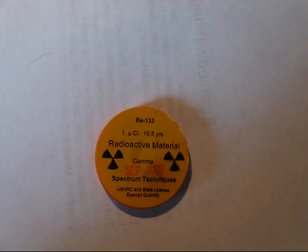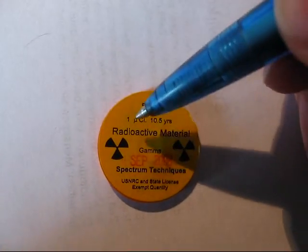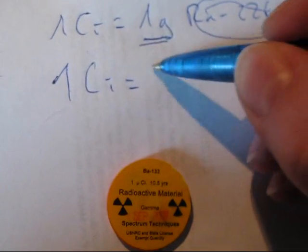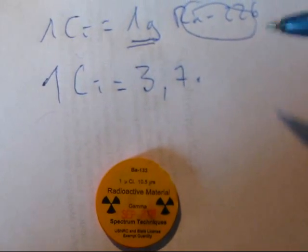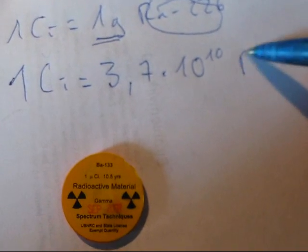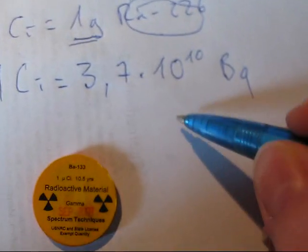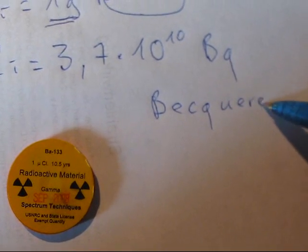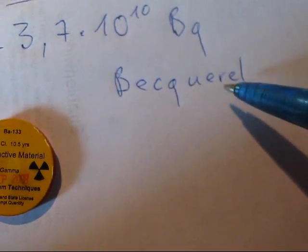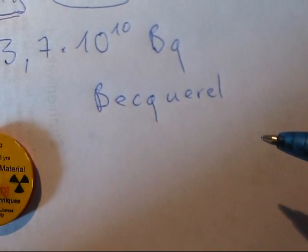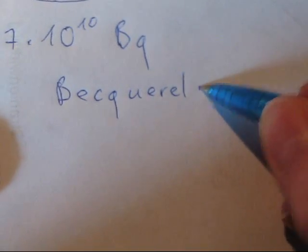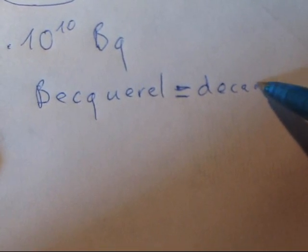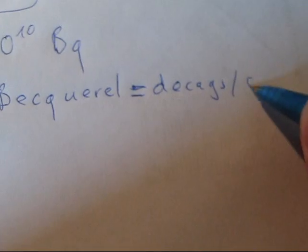However, this unit is kind of bulky, so we're going to convert it. So one curie also equals to 3.7 times 10 to the power of 10 Becquerel. Now the Becquerel—it's French, so I'm not sure if I'm saying it right—is a unit that determines the amount of decays per second. So Becquerel is decays per second.